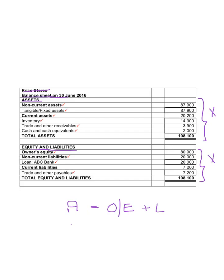The assets are divided into two sections: non-current assets and current assets. Non-current assets are assets that will remain the same for more than a year. That is the tangible or fixed assets, also called property, plant and equipment. If there was a fixed deposit, it would also fall under non-current assets. In the balance sheet, you don't list equipment, vehicles, land and buildings separately — you call the total amount 'fixed assets.'